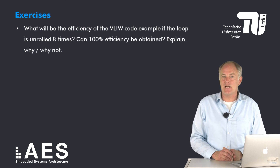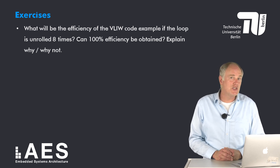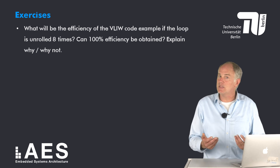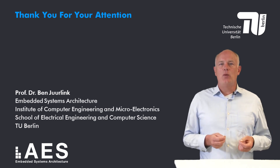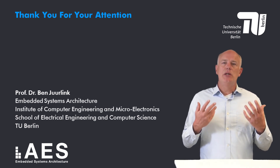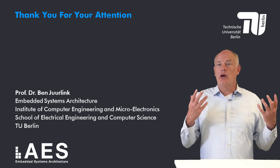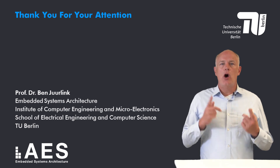Finally, a small exercise: what will be the efficiency of the VLIW code example if the loop is unrolled eight times? Can we achieve 100% efficiency? If so, explain. If not, explain why not. This completes this lesson. In the next lesson I will discuss two other challenges of VLIW processors: namely, the complexity of the register file and how to deal with control hazards. Hope to see you back.